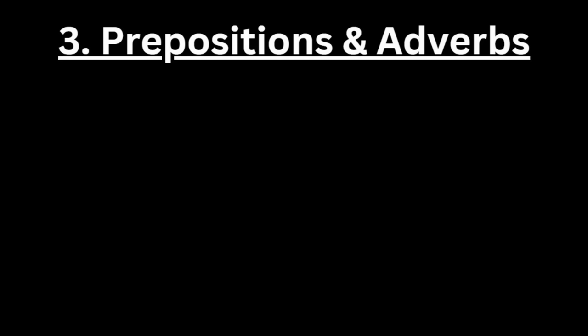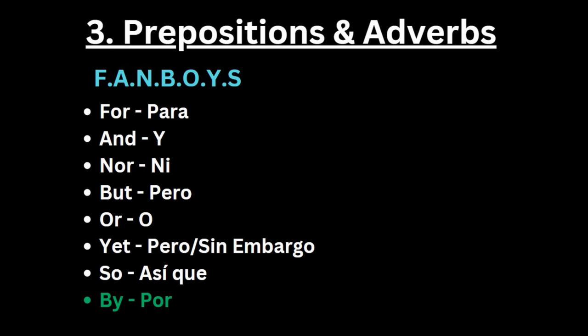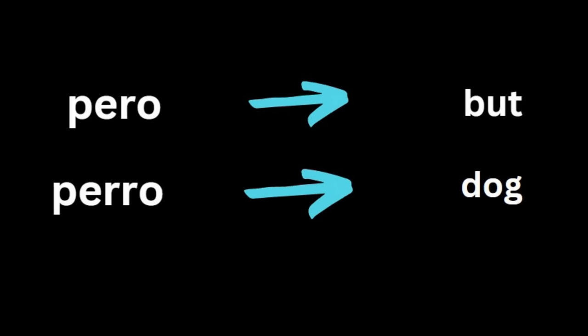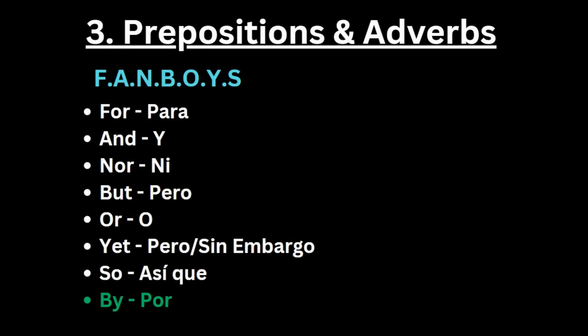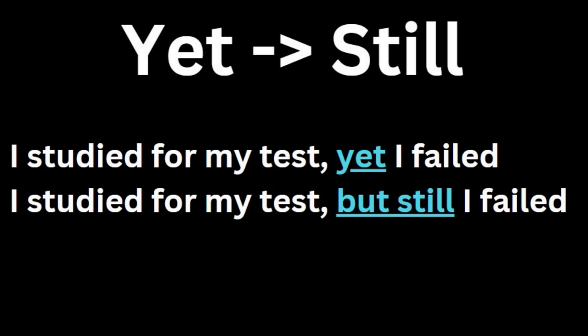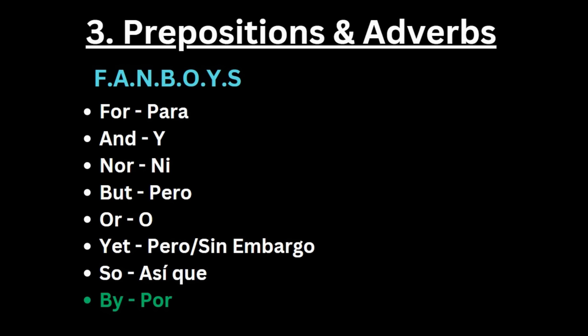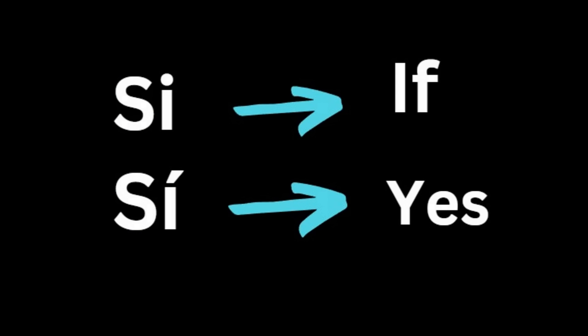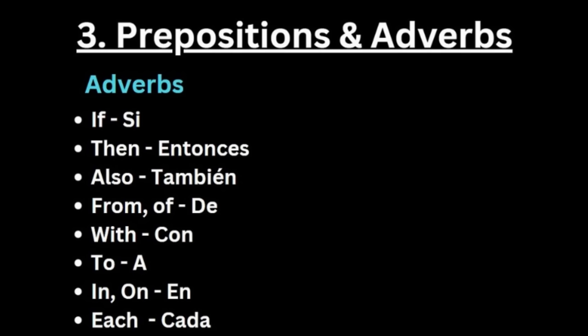Prepositional words and adverbs: for is para, and is y, nor is ni, but is pero — make sure you have one r, because 'perro' with two r's means dog. Or is o, yet is used as 'sin embargo,' so is 'así que,' and by is por. For adverbs: if is si without accent, because with an accent 'sí' means yes. Then is entonces, also is también, of and from both mean de, with is con, to is a, in and on is en, and each is cada.